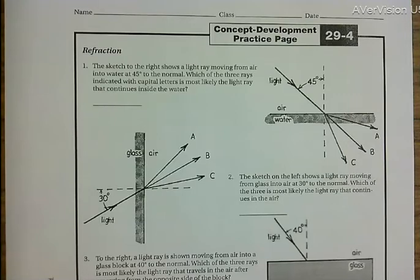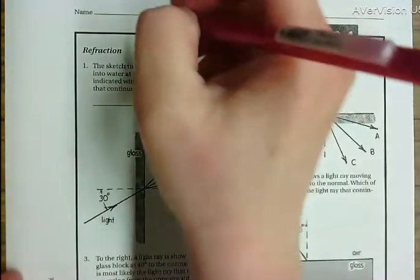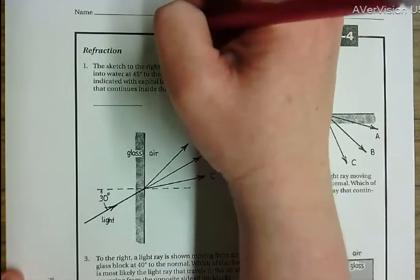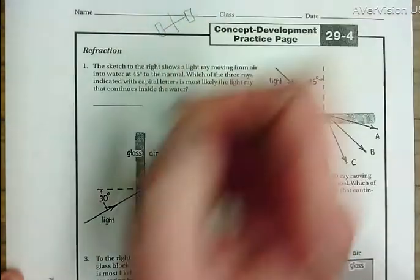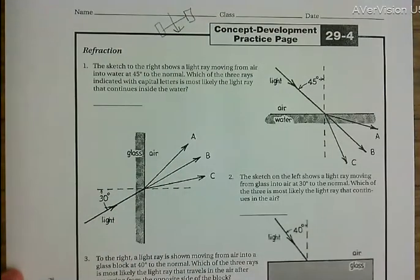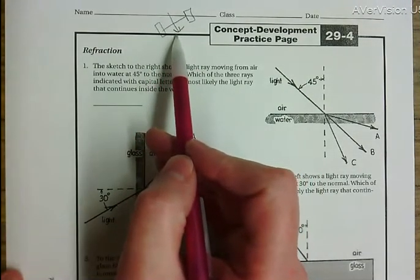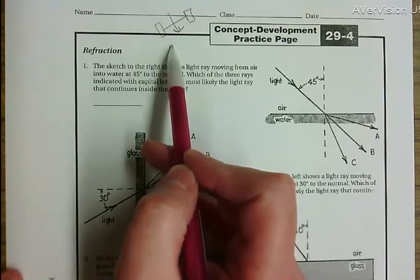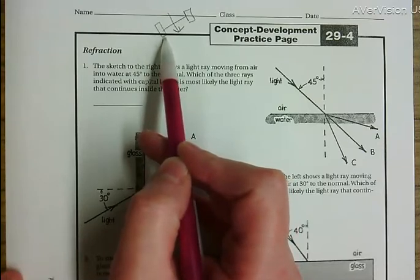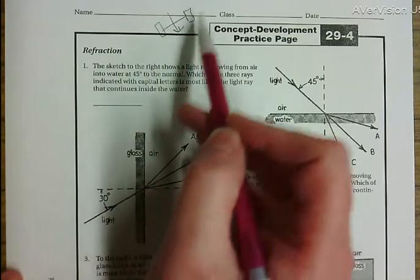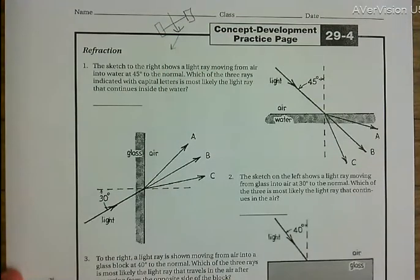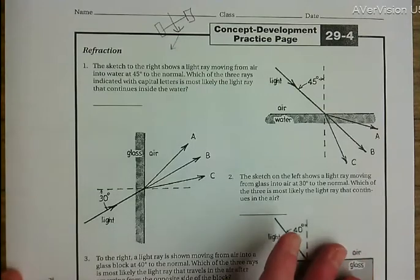Our way to think about this is like we did with that grass example, where we think about a set of wheels. We consider which wheel is going to slow down or speed up first. If this was air and this was water, water would mean the wheel rolls more slowly, and so we would expect a bending effect towards that slower wheel.